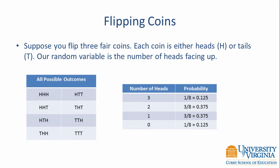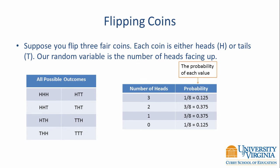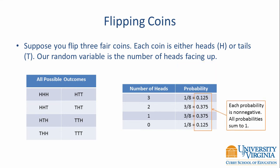If we look back at our table on the right, the first column shows the values of the random variable, which can be 3, 2, 1, or 0. The column on the right shows the probability of each possible value. For example, the probability of having two heads is 3/8ths, or 0.375. If we add up all of those probabilities, they sum to 1. Therefore, the table on the right shows the probability distribution for flipping three fair coins.